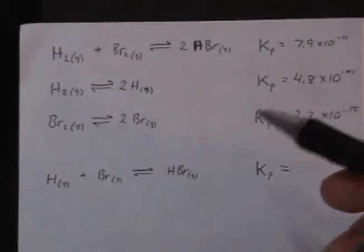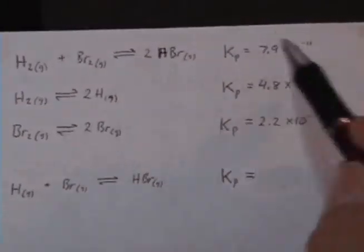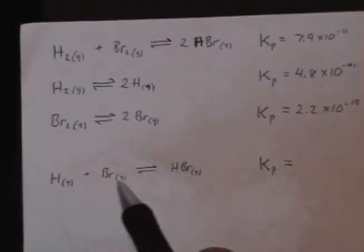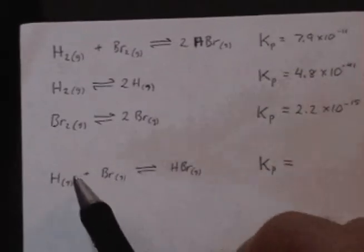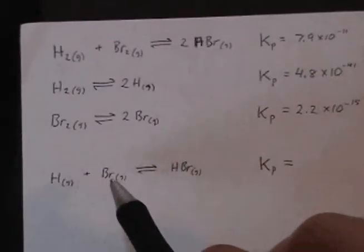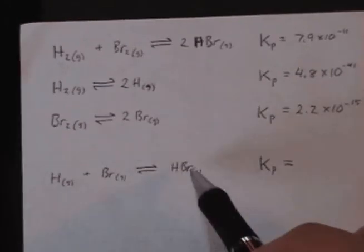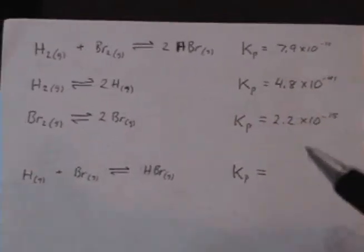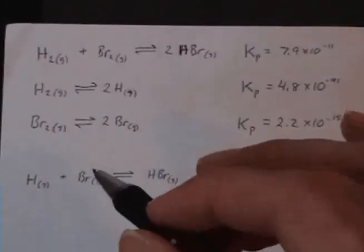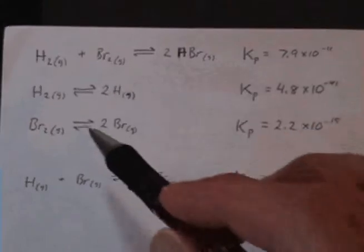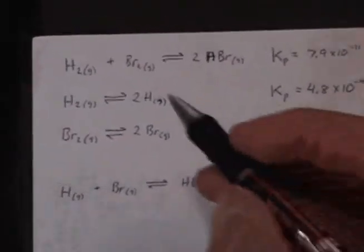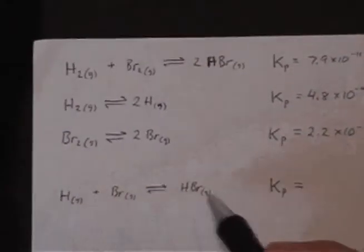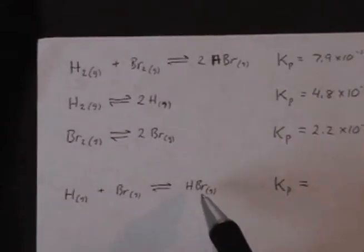So the question here is, based on this information, let's find a value for the equilibrium constant of this reaction, which is a combination of a hydrogen atom and bromine atom to form the hydrogen bromide molecule. Okay, so this kind of is a flashback to Hess's law if you will, where we need to combine these three reactions to sum up to our final reaction.